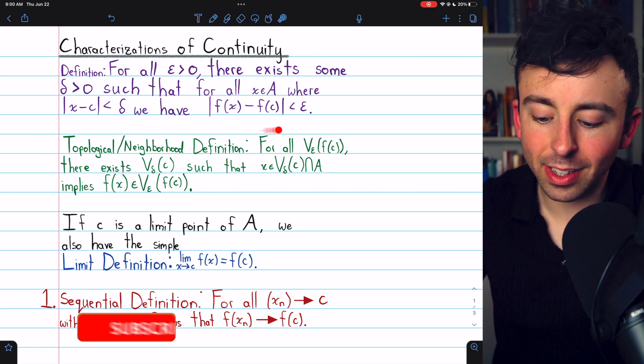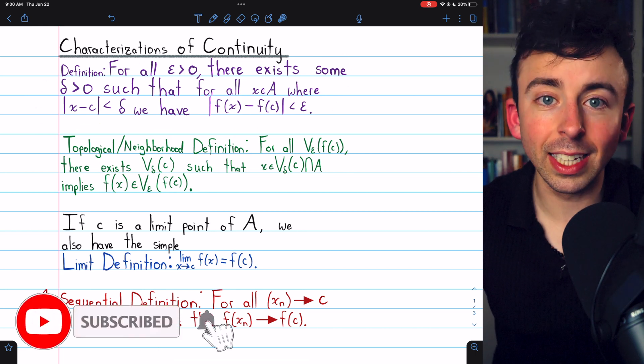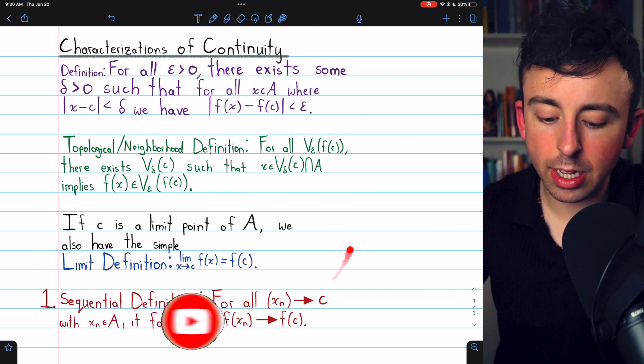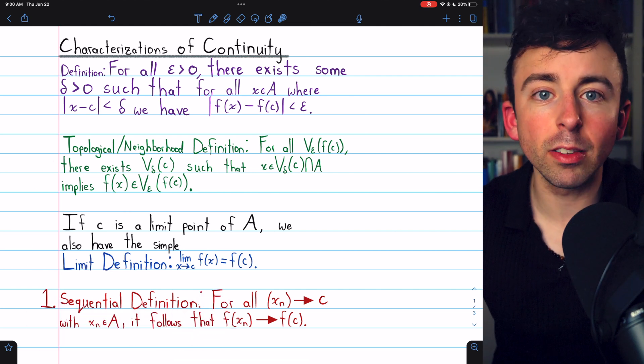When we introduced the epsilon-delta definition of continuity, link in the description to that lesson, we also talked about these other three equivalent characterizations of continuity.